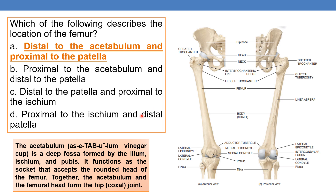It is a deep fossa, and together the acetabulum and the femoral head form the hip joint. Femur is distal to the acetabulum — distal indicates away from the point of attachment. Proximal means nearer to the point of attachment. So the femur is distal to the acetabulum and proximal to the patella.